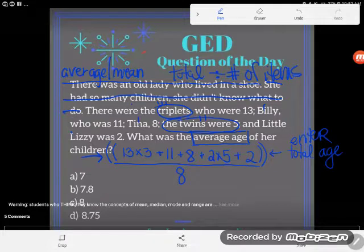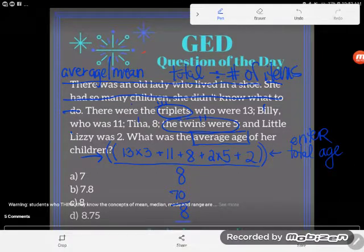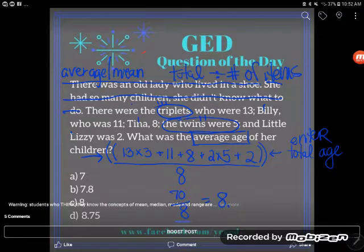Okay so I get that their total age is 70 and now I'll take that answer and divide by 8. So 70 divided by 8 gives me 8.75, the average age of the kids is 8.75.